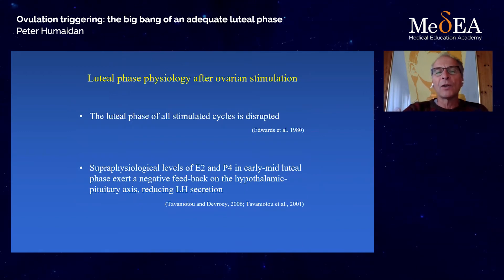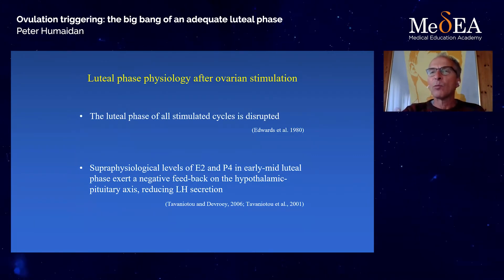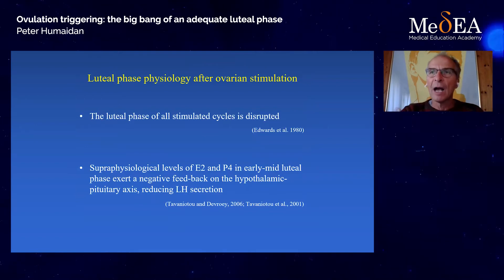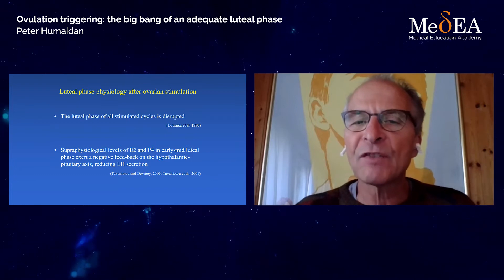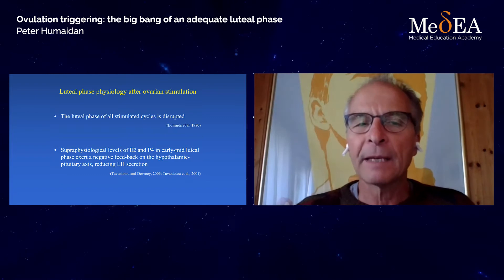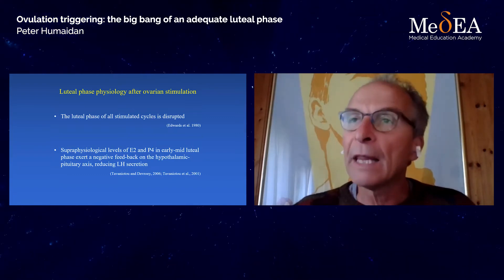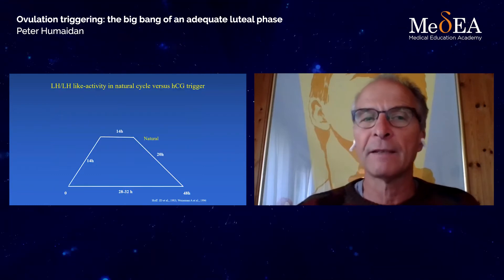What we learned over the years was that once we start stimulating our patients, the luteal phase is going to be disrupted. Once you have more than three follicles, you will have high progesterone and high estradiol during the early luteal phase. Specifically, the high progesterone will exert a negative feedback on the hypothalamic-pituitary axis, so LH levels will be low after stimulation in the luteal phase.